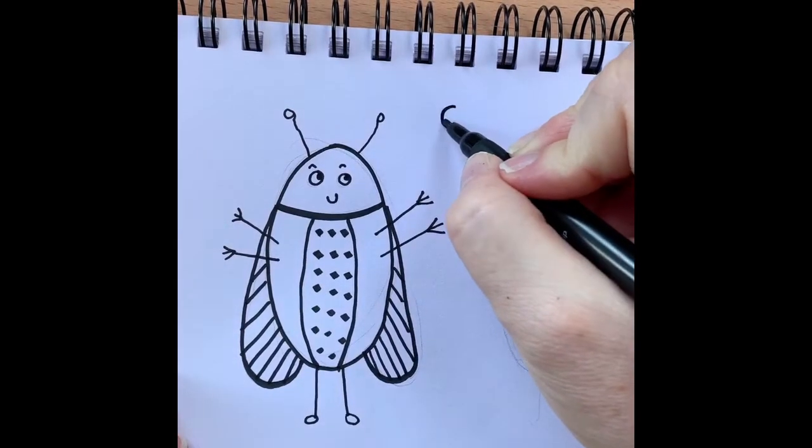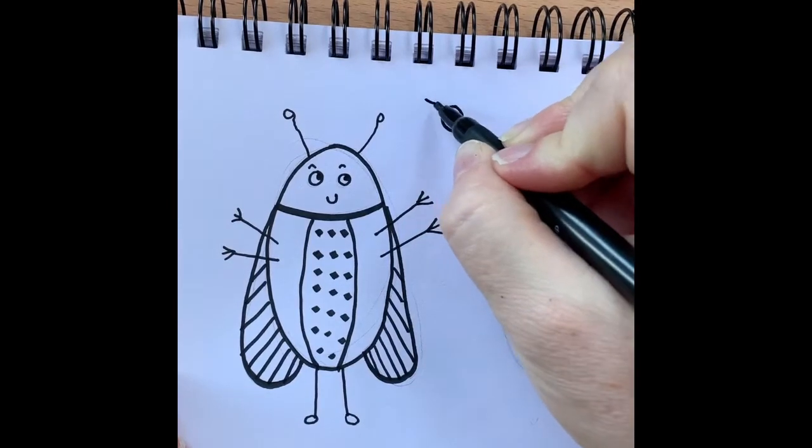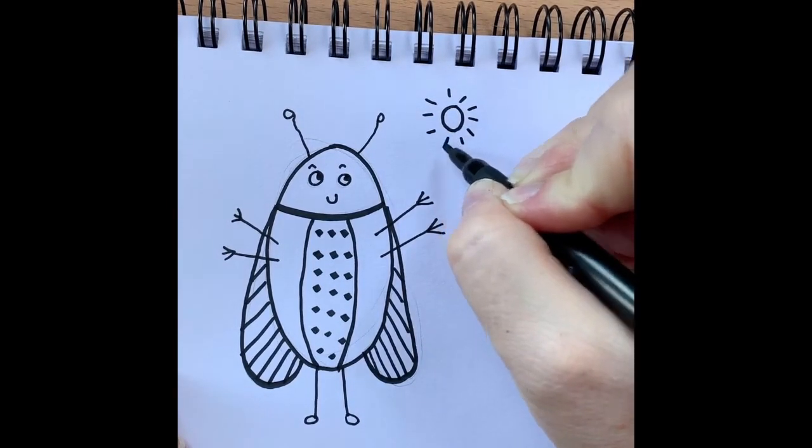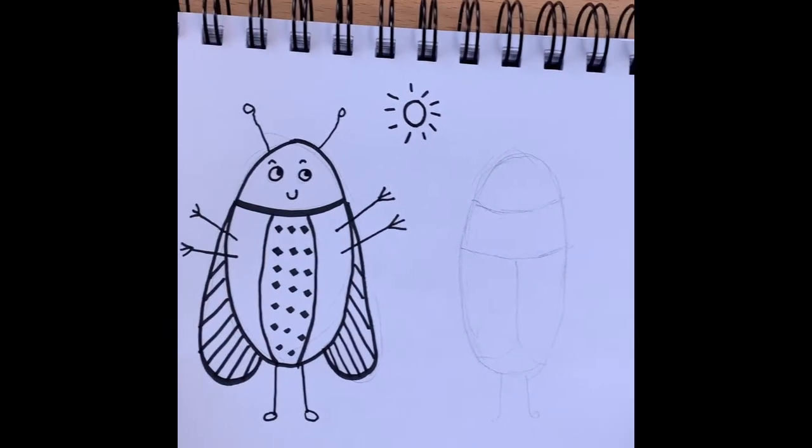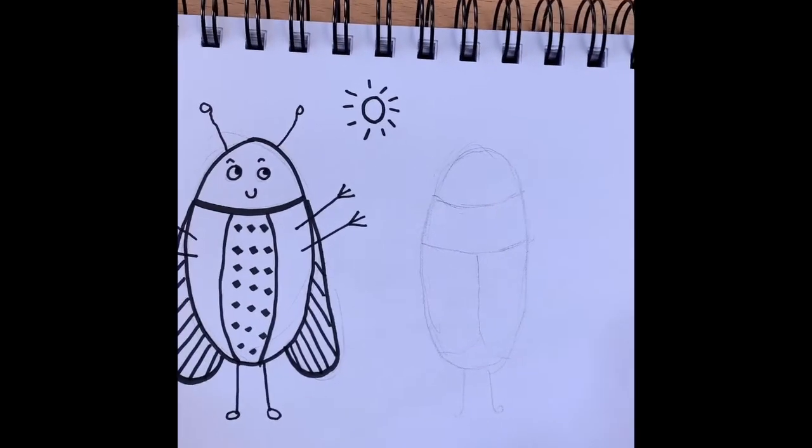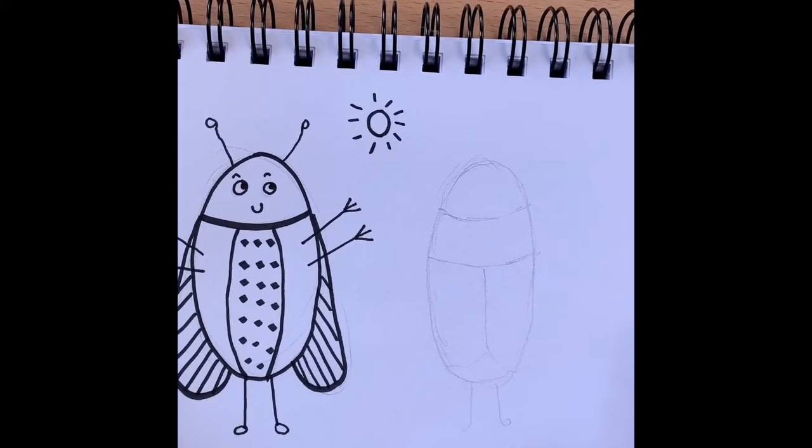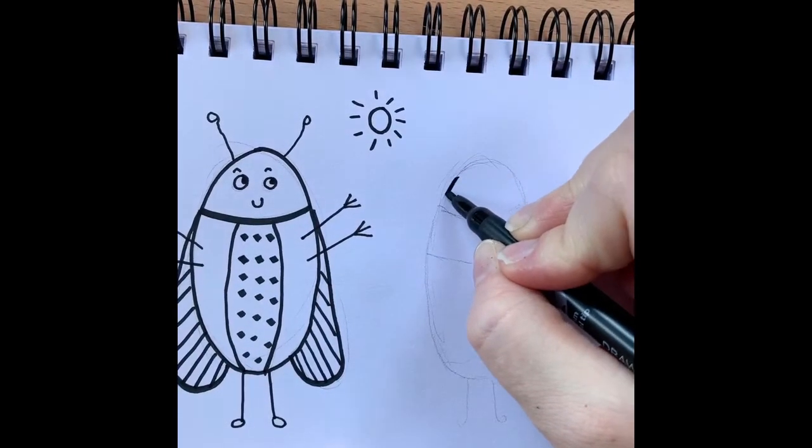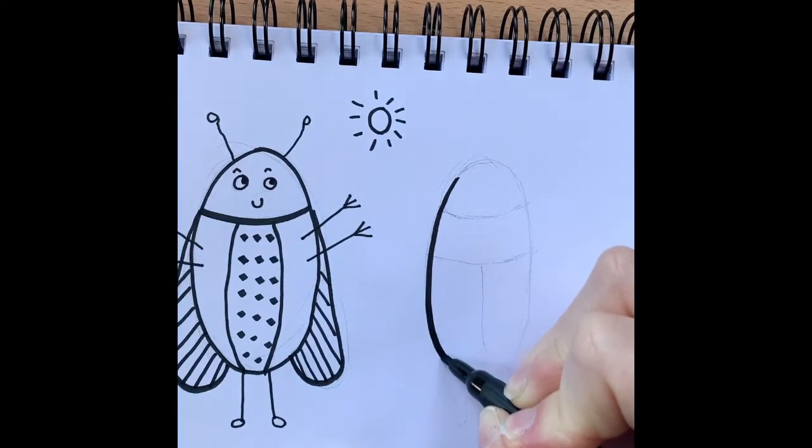So we're going to draw the sunshine in the middle, which is a circle with lots of lines. And then I'm going to get started on this character. Now he's going to be a little bit like a beetle, so he's going to have more like horns. So we're going to start to do our oval shape to start off with.